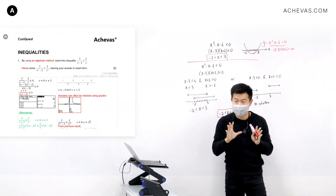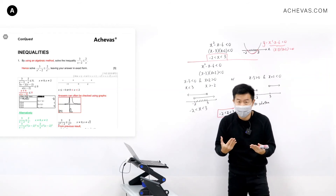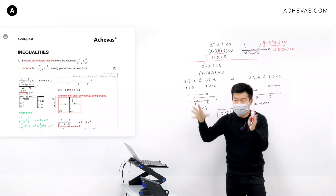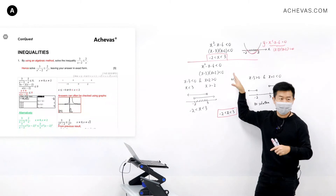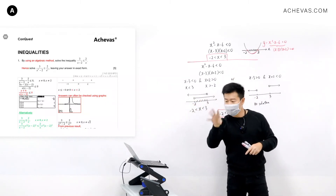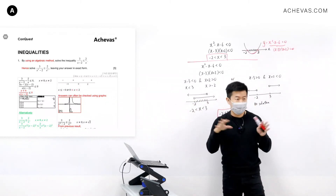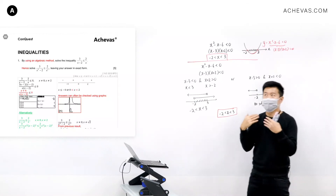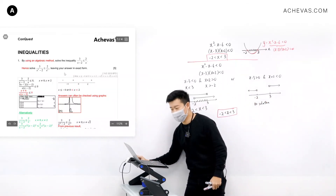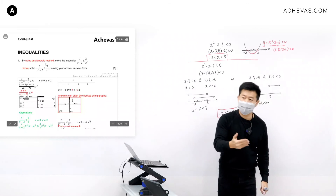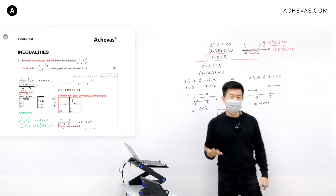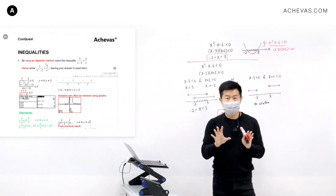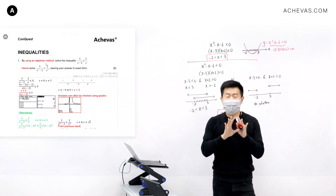If I have three factors, the possible sign combinations for their product to be less than zero include plus-plus-minus, plus-minus-plus, minus-plus-plus, and so on — there are so many cases. How can we ask students to solve such an inequality algebraically without overwhelming them with all these sign combinations? Your school came up with a very efficient strategy.